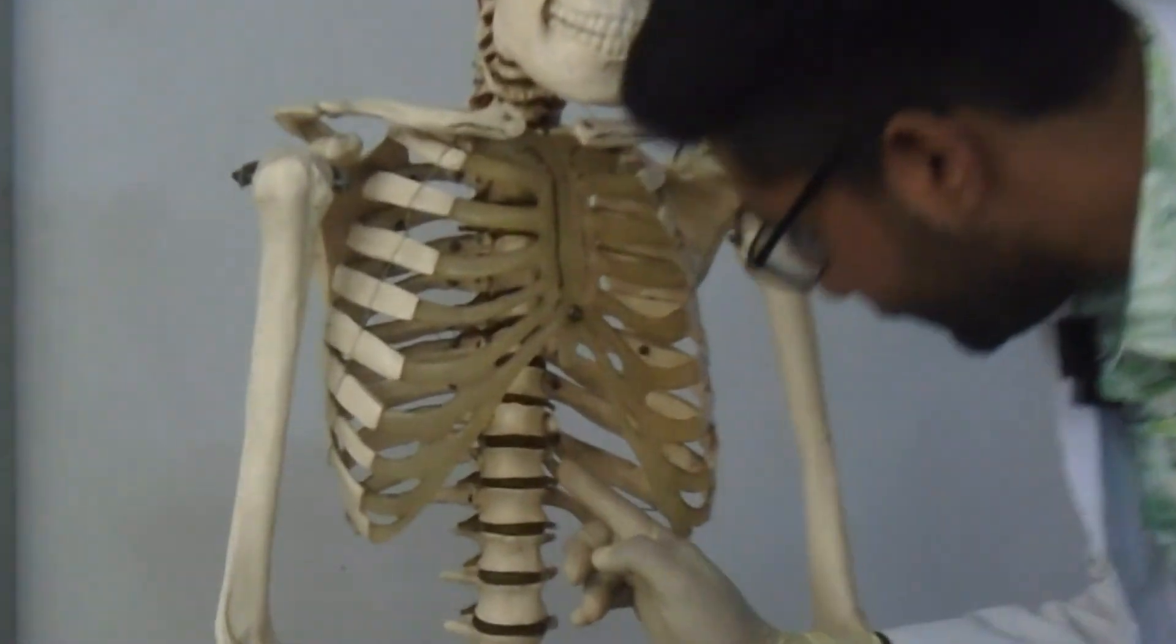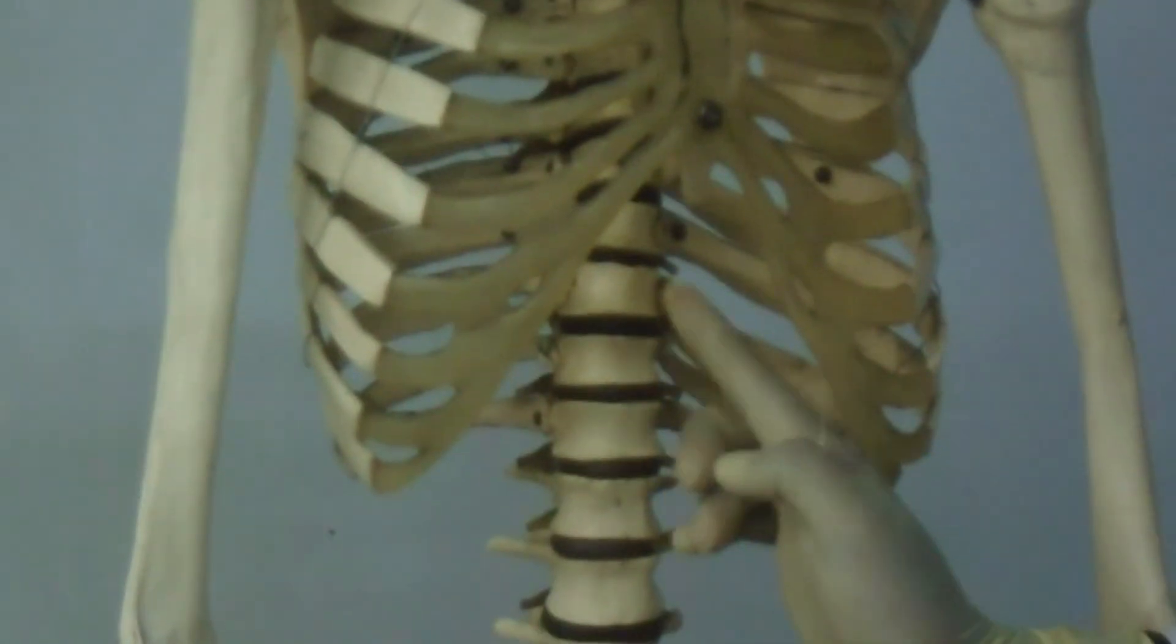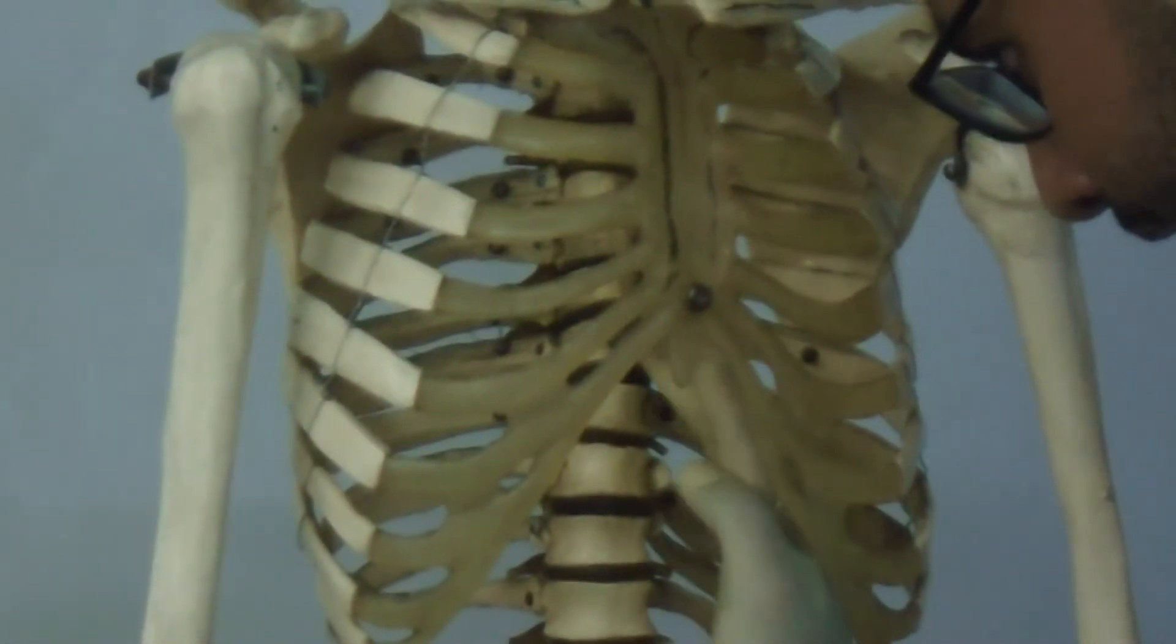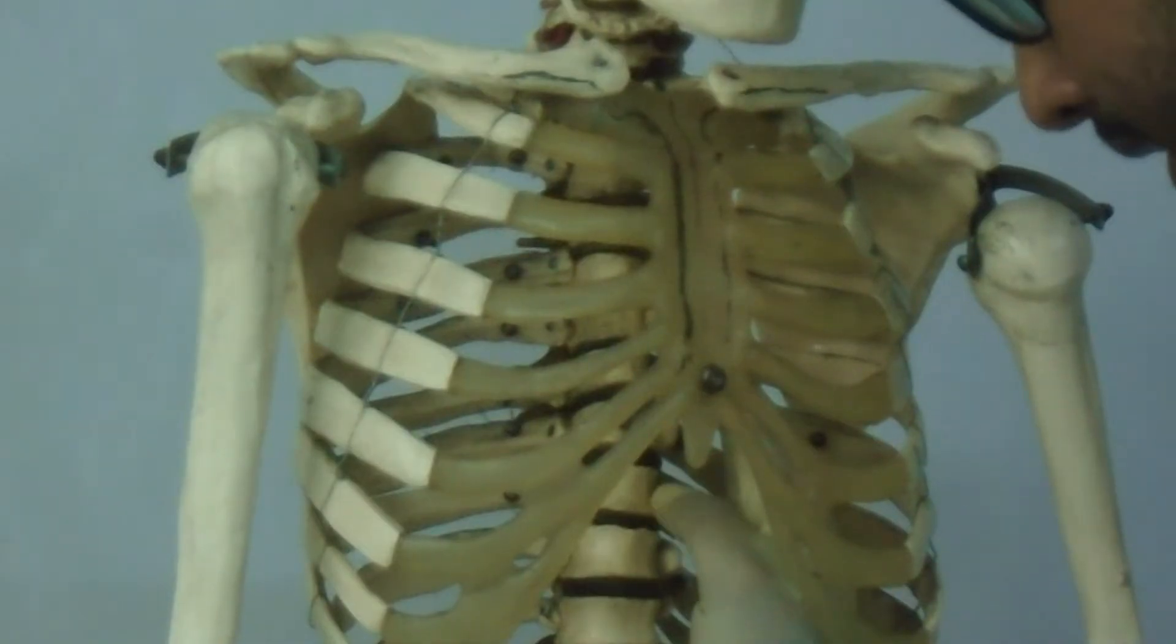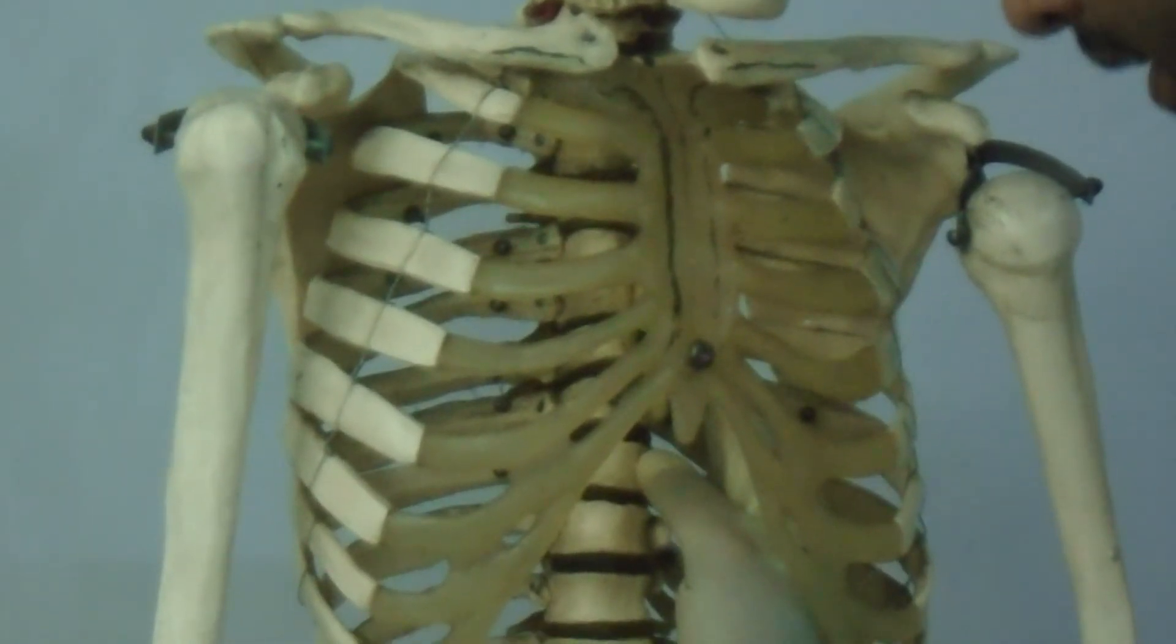Here are the vertebrae: T11, T10, T9, T8, T7, and T6. This confirms the T6 and T9 vertebrae level.